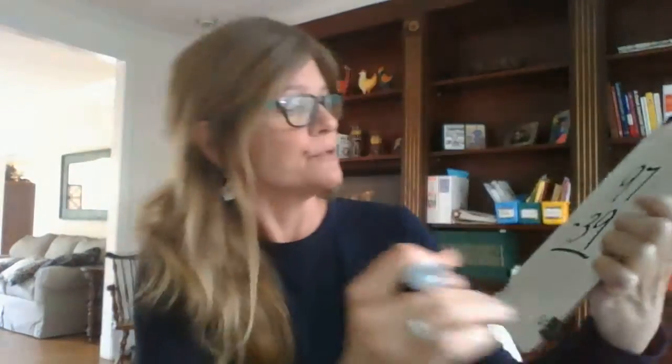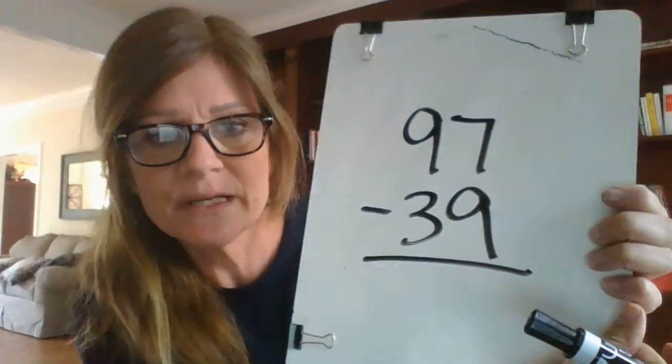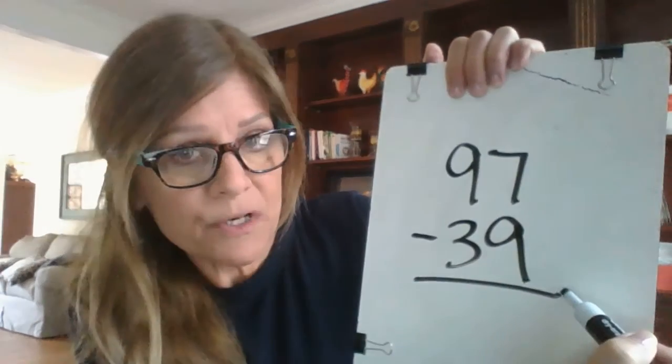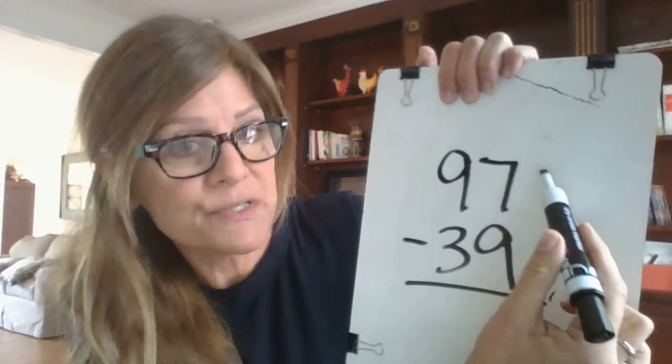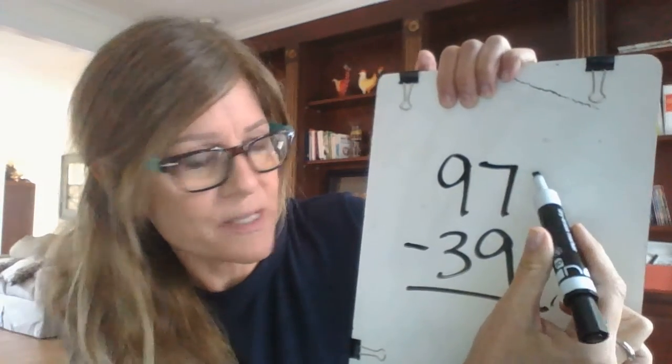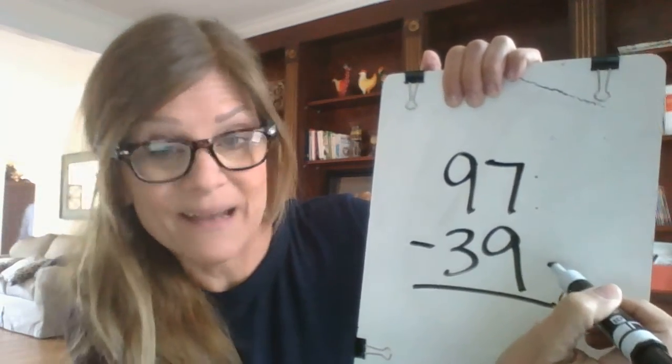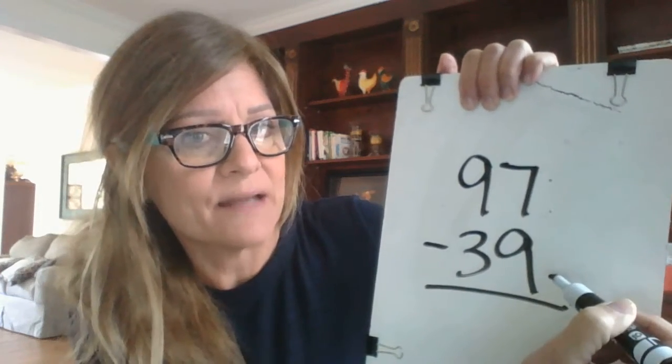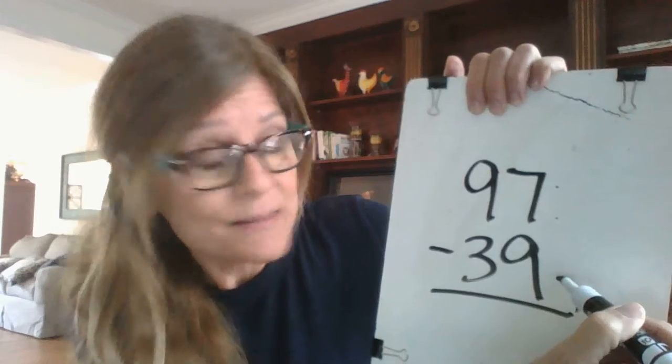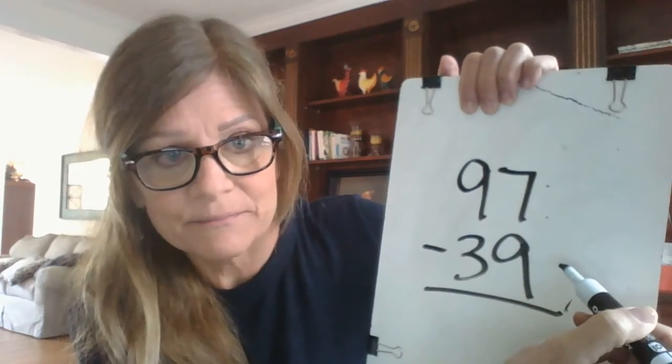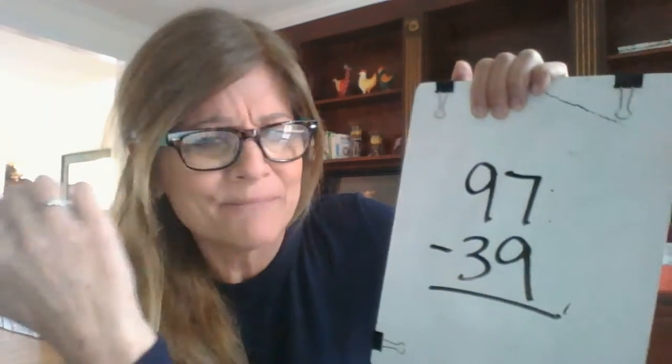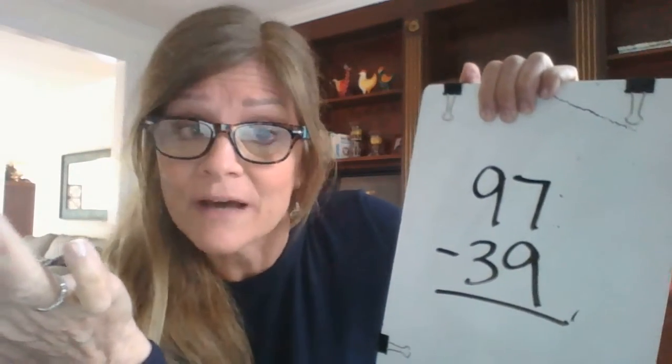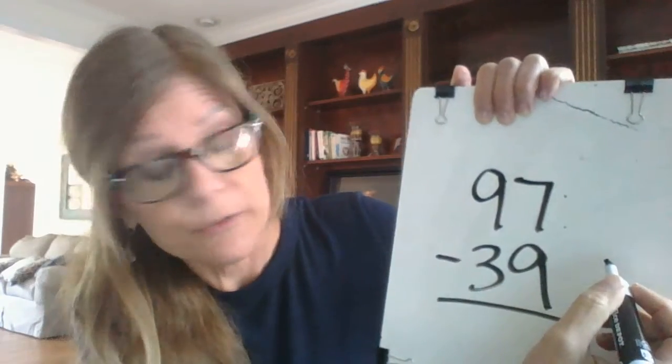We're going to try one more. Okay? This time we're going to solve ninety-seven minus thirty-nine. Again, we always start in the ones column. And we always start at the top and we ask ourselves, seven minus nine, can I do that? If I have seven, can I take nine away? And I can't because nine is greater than seven. Just always think, if I have seven cookies, can I give nine away? No, you don't have enough. Okay? So we have to regroup.